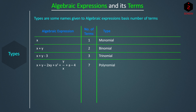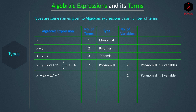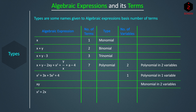Polynomials can have one or more variables. This one has two variables, X and Y, so it is a polynomial in two variables. If we take a polynomial X² + 3X + 5X³ + 4, it has only one variable, X, hence it is a polynomial in one variable. Similarly, XY can be a monomial in two variables, and X² + 2X can be a binomial in one variable, and so on.